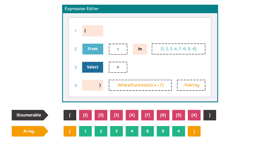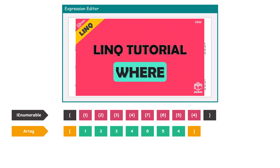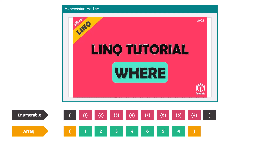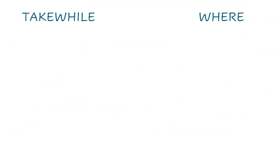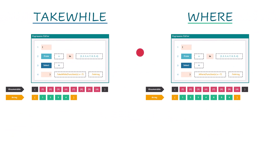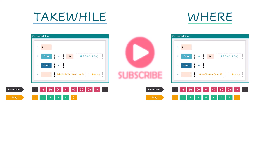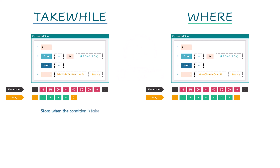If you want to learn more about the Where function, please check the following video where I talked about it in detail. Let's summarize these two functions to differentiate between them. TakeWhile returns elements as long as the condition is true; once the condition is false, we don't process the next elements. But the Where function continues and finds all elements which meet the condition. Both functions are used to filter data and get specific results from the source.